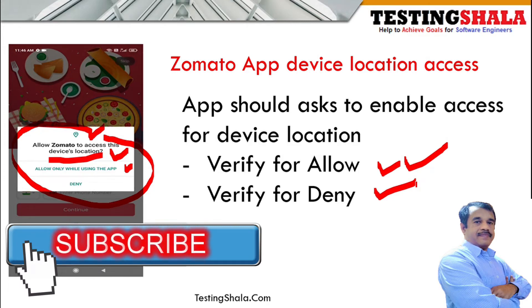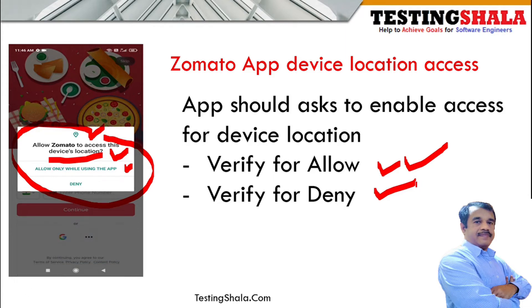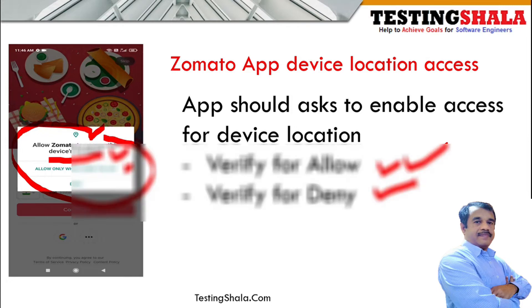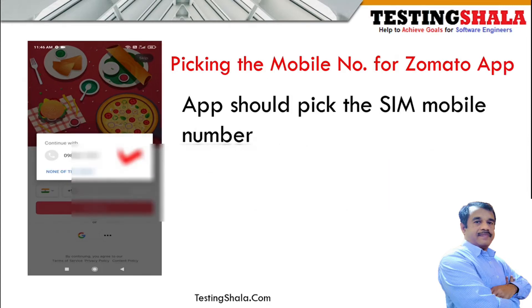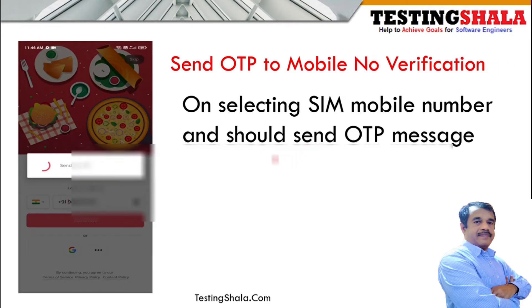Enabling device location will enable GPS on your mobile. Any order you place will by default use your GPS location so the order can be delivered to you quickly. By default, it will also pick your primary SIM number and ask if you want to use it for login. If you continue with the primary SIM, it will send an OTP to that number.